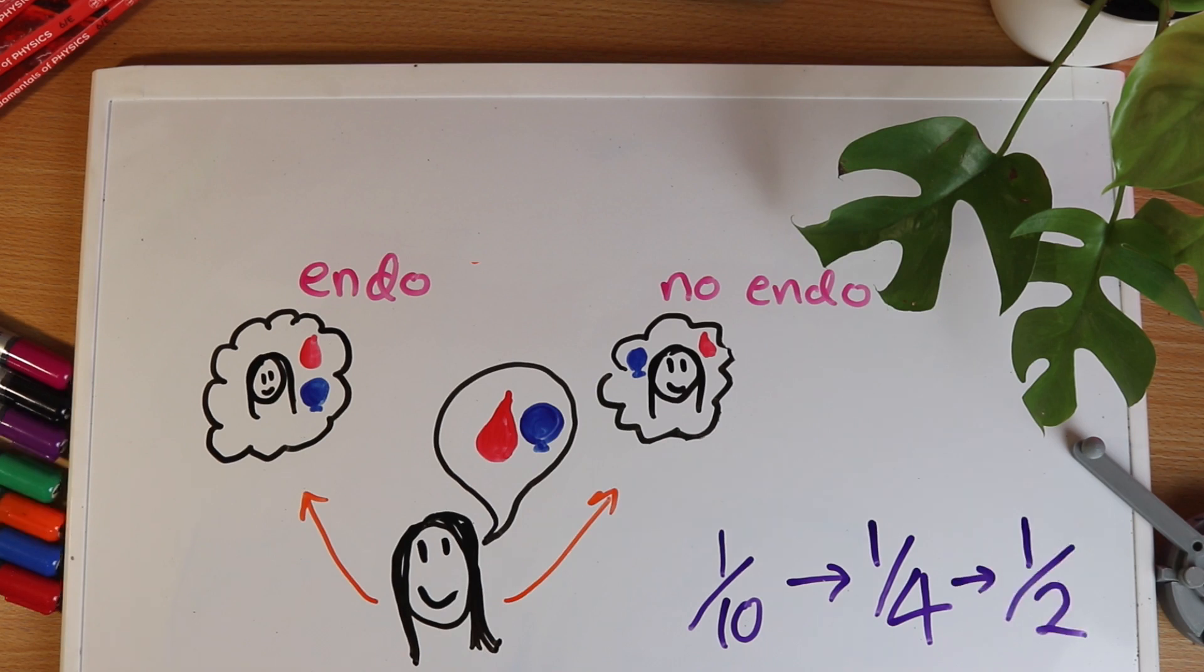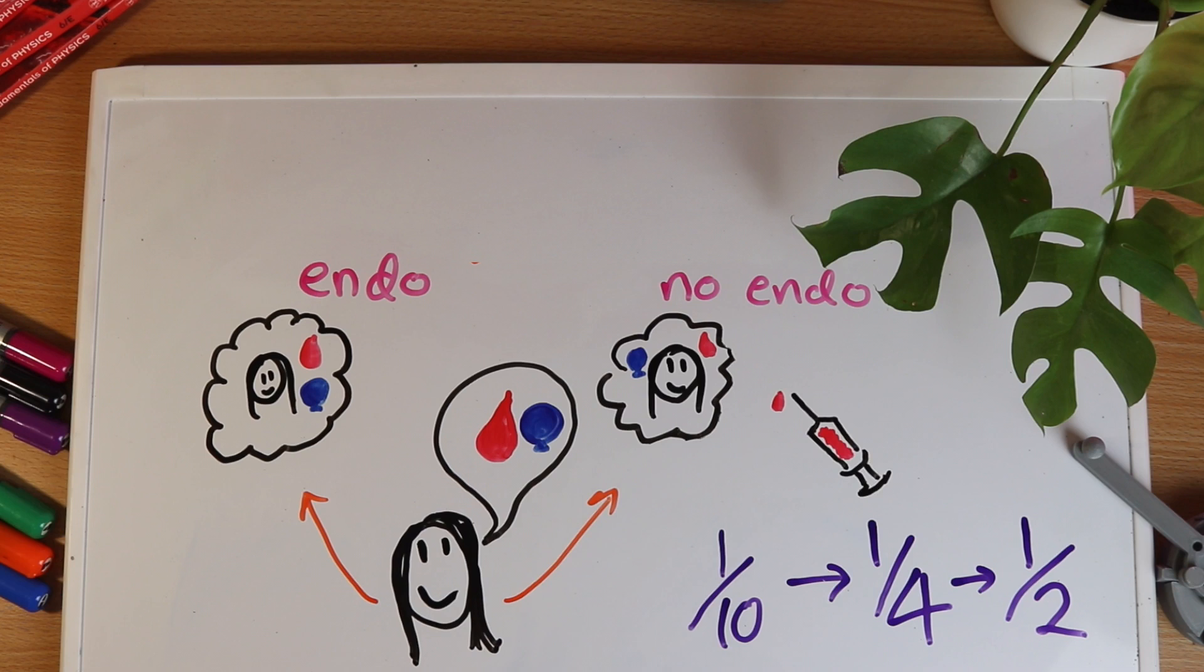In our model having both bad period pain and bloating makes the chance that you have endo around 50%. The numbers I used for this little calculation certainly aren't accurate but I hope that they showed you how you can turn pieces of evidence that on their own aren't that conclusive like symptoms or even blood tests and ultrasound tests and combine them to get a more solid picture.